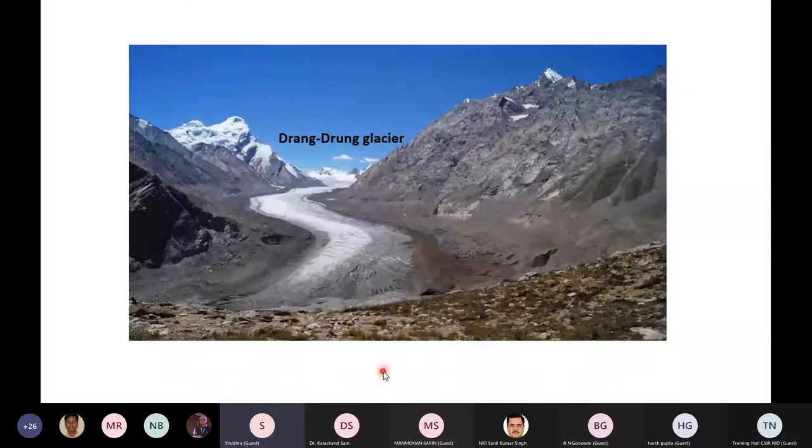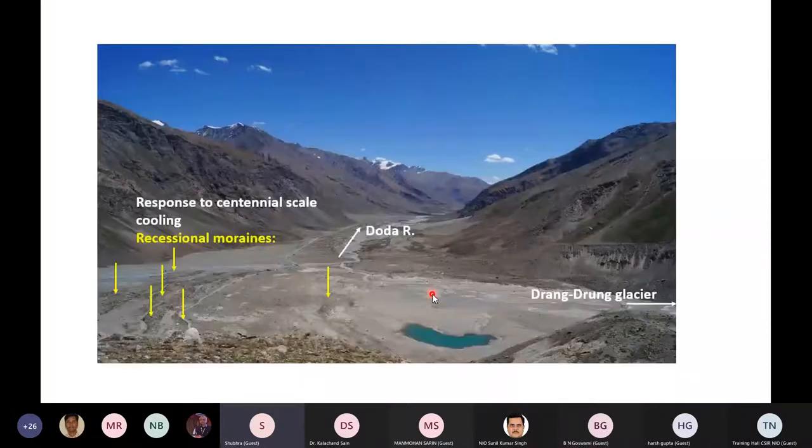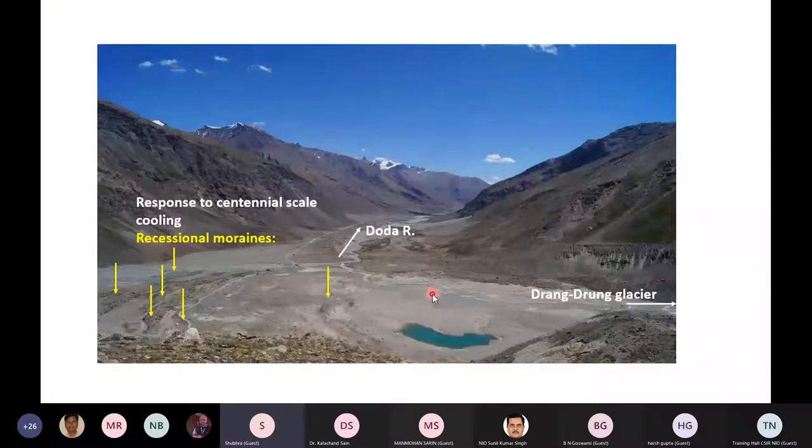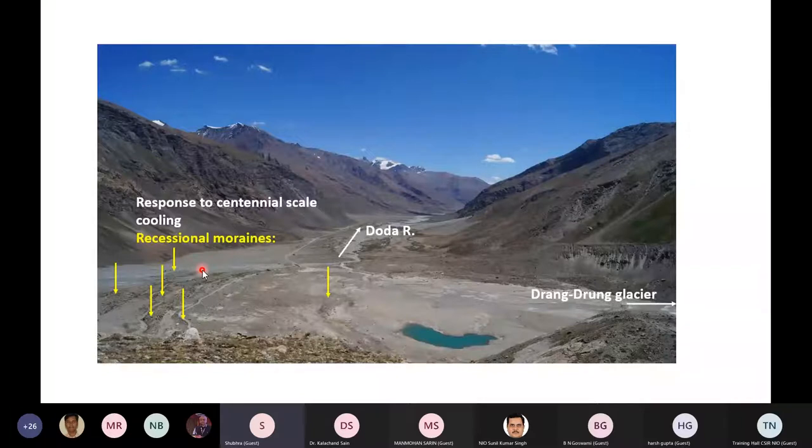Similar events were documented for this Brangdrum glacier. I'm not showing the pictures in the interest of time here. Another interesting observation that we made in Zanskar valley was the spectacular series of recessional moraines were preserved in the valleys. As you can see, these are marked by these yellow arrows here. These recessional moraines represent the halting of glacier recession in overall when there was a phase of retreat going on.